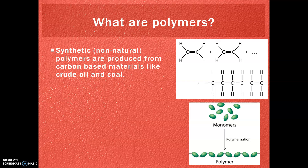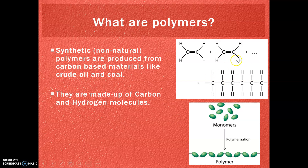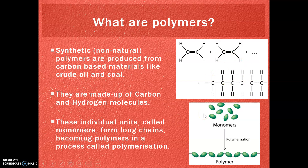Non-natural synthetic polymers that we make nowadays are made from crude oil and coal — carbon and hydrogen molecules joined together in different formations. These individual units are called monomers, with mono meaning one. They form long chains together becoming polymers, with poly meaning multiple. This process is called polymerisation, and that is why all plastics are called polymers.